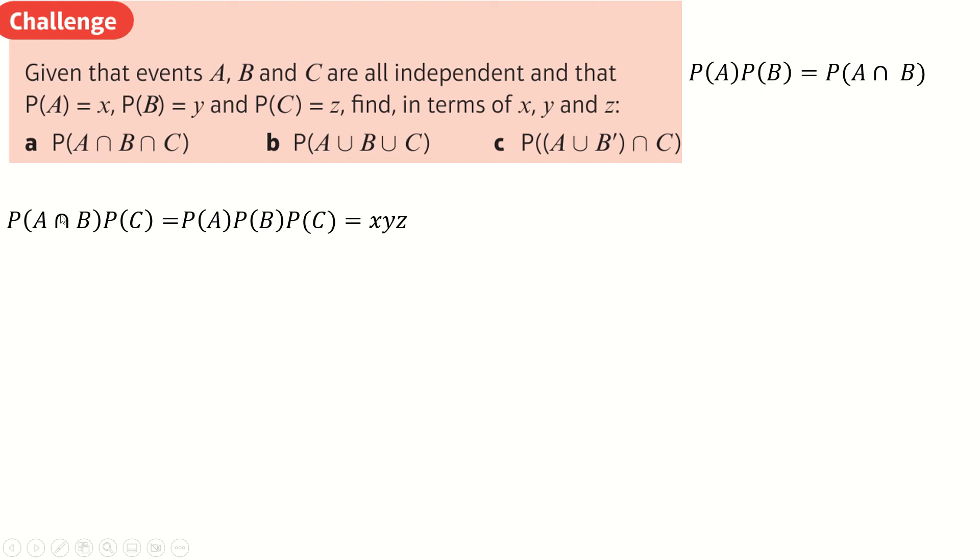If you just replace this with A and B, would become A and B and C at the end there. And therefore, that's equal to XYZ, just from that chain. And now this one here, now we can use maybe this rule here to jump us from intersections to unions.